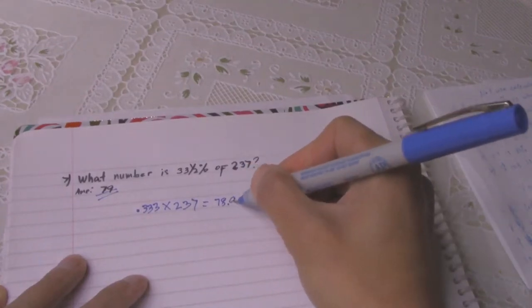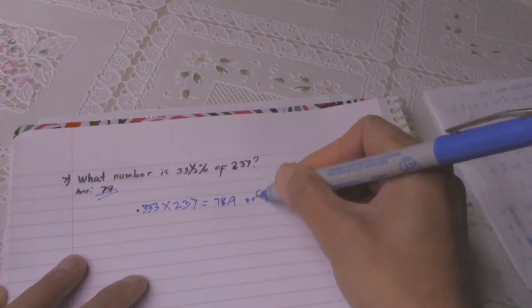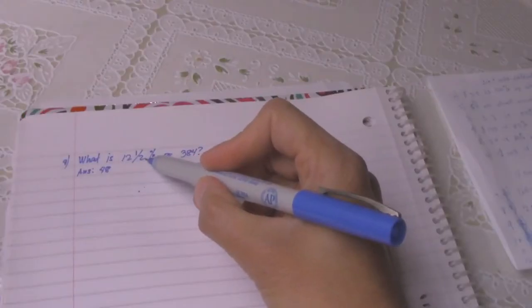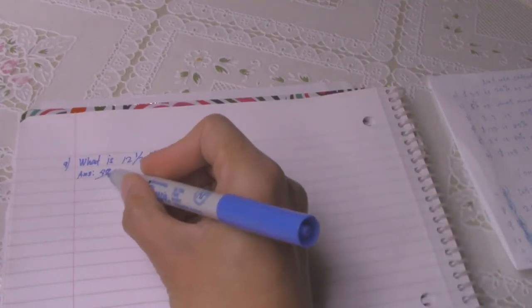Number 8: what is 12 and one half percent of 384? The answer is 48. So you times 0.125 times 384, the answer is 48.